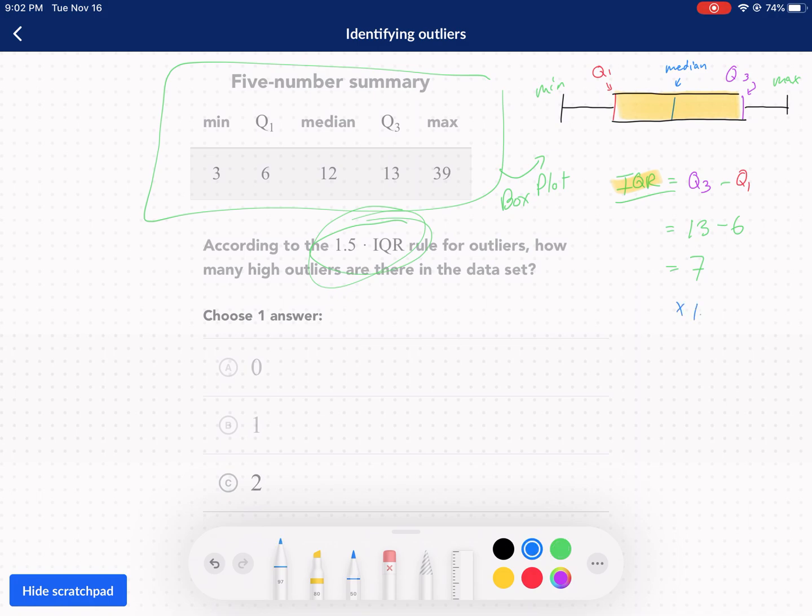...times 1.5. When I do that, I multiply this by 1.5 and I get 10.5. This is my IQR rule to see if it's an outlier. Now what does this mean? That means from the yellow box, this is the most confusing part, from the yellow box I can go 10.5 units to the right and I can go 10.5 units to the left and have it still be within the data.